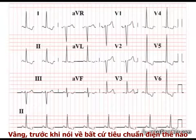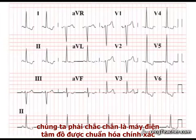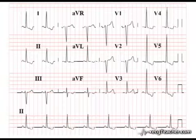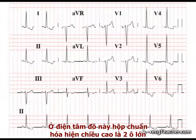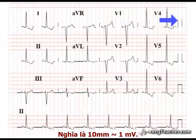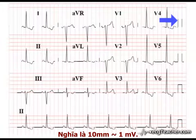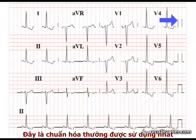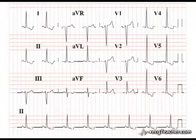Before applying any voltage criterion, you first make sure that the ECG machine is correctly calibrated. On this particular ECG, a calibration box of two large squares in height indicates that a 10 mm deflection is produced by a potential of 0.1 millivolts. This is the standard calibration and we can proceed.